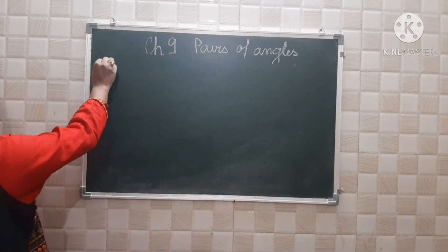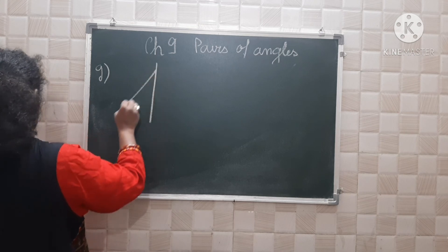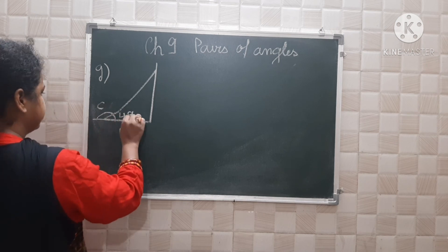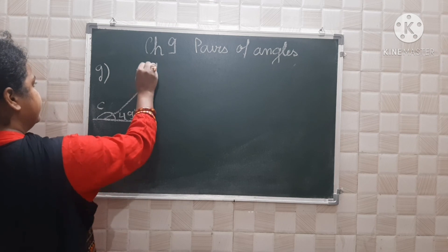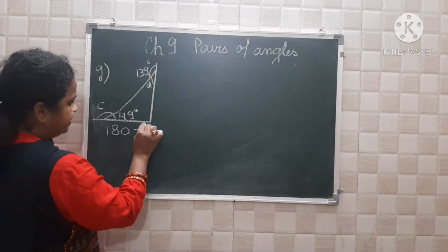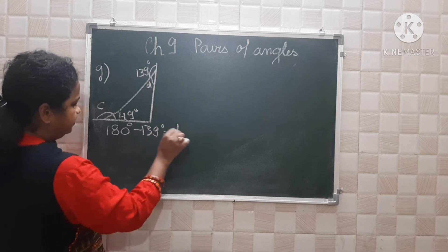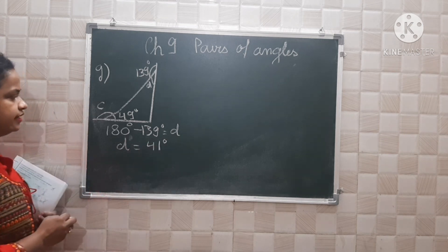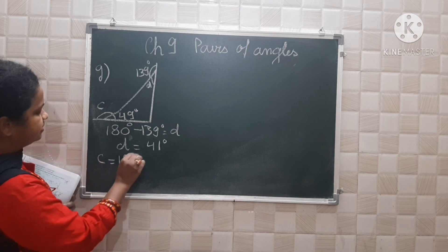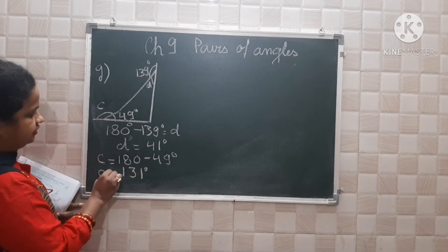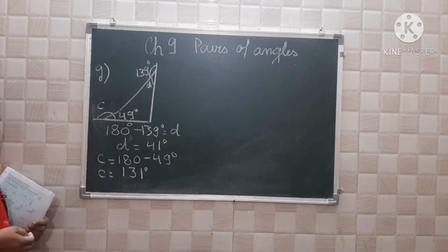For part G, the angles are 49 degrees, 139 degrees, and D. So 180 minus 139 degrees equals D, giving D equal to 41 degrees. And C equals 180 minus 49 degrees, which is 131 degrees. So the value of D is 41 degrees and the value of C is 131 degrees.